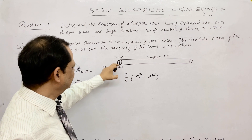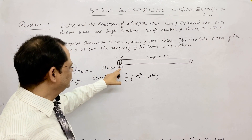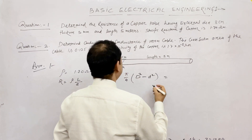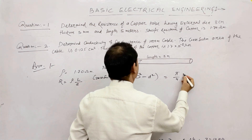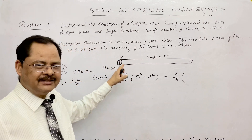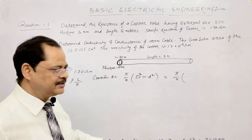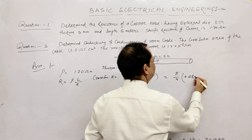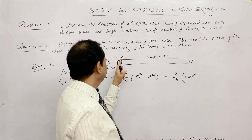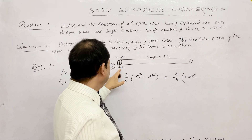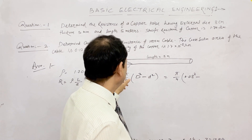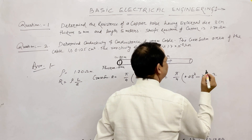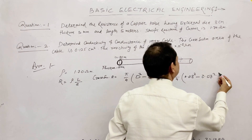The external diameter is 8 cm. The thickness is 5 mm on each side, so both sides together give 1 cm. Therefore the internal diameter is 8 cm minus 1 cm = 7 cm. Converting to meters: external D = 0.08 m, internal d = 0.07 m.